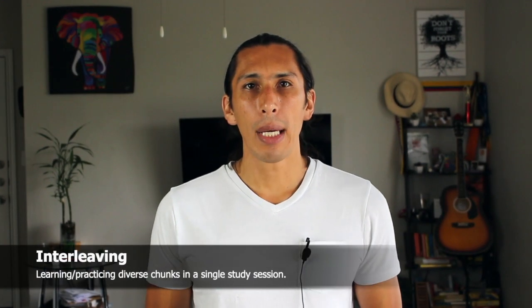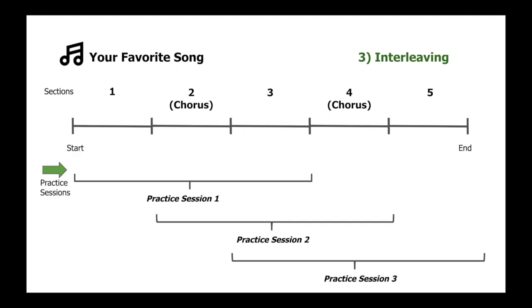The next meta-learning concept is called interleaving. Many people think that we need to first master a piece of information in order to move to the next one. We will apply a different approach: from the sections we have in the song, instead of practicing only one per practice session, we will combine, let's say, one, two and three in a session. Then the next session we'll use two, three and four, and the next session three, four and five, and so on. This is very helpful because it prepares our brains to absorb information easily and get ready to consolidate it.